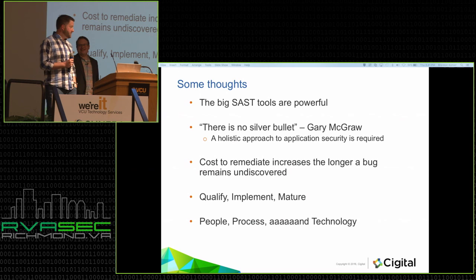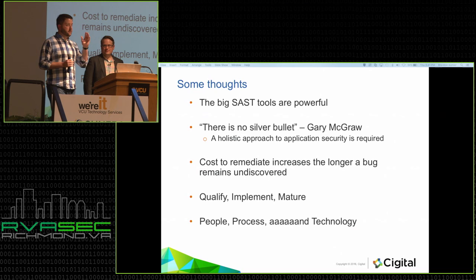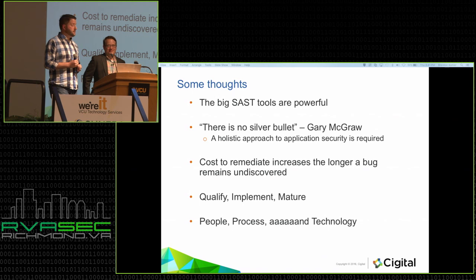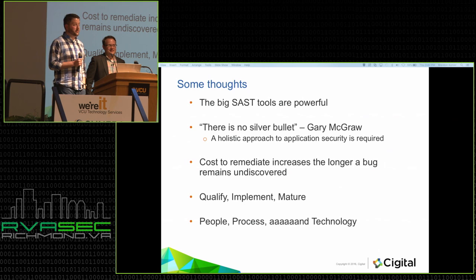The three parts to rolling out a static analysis program: qualify, implement, and mature. The key thing from our perspective is it's all about people and process around the technology. The BSIMM data showed it — everybody buys the tool, but you've got to really build the people and process around it. Thank you all very much.